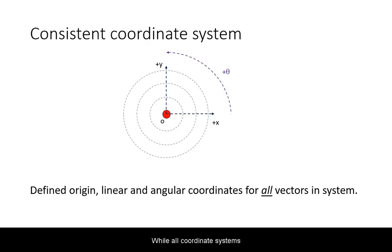While all coordinate systems define reference coordinates, in a consistent coordinate system, all vectors are calculated in reference to those coordinates.